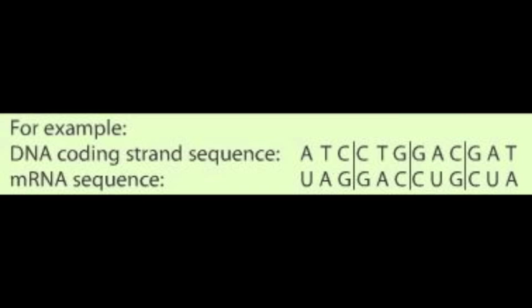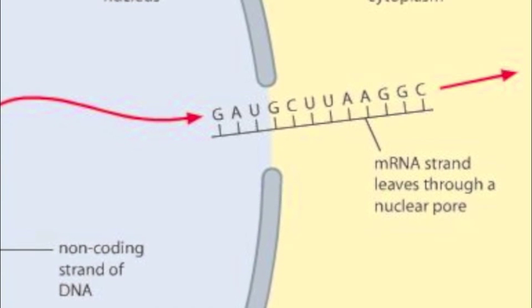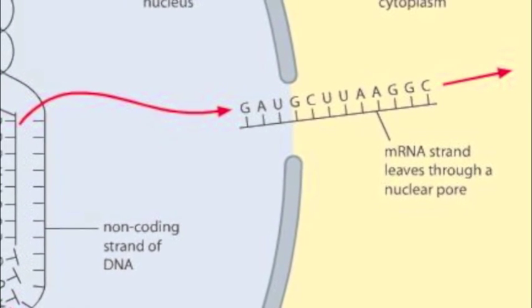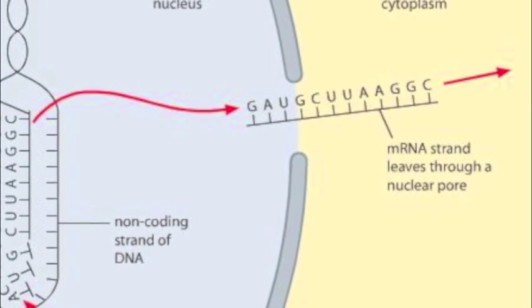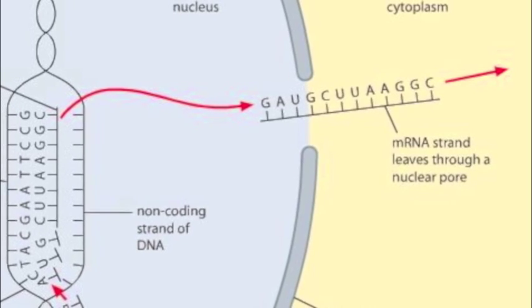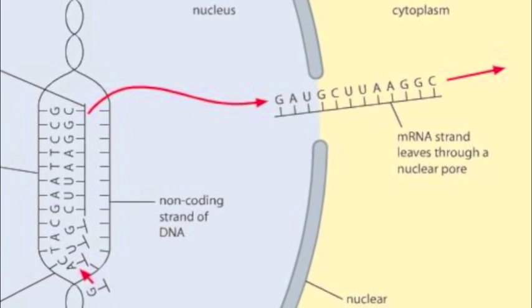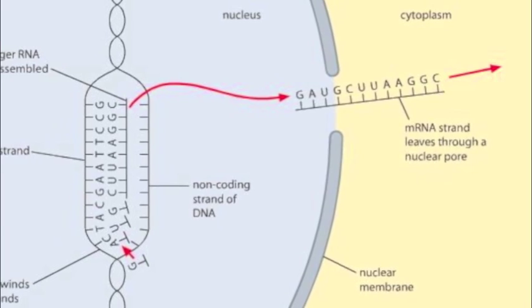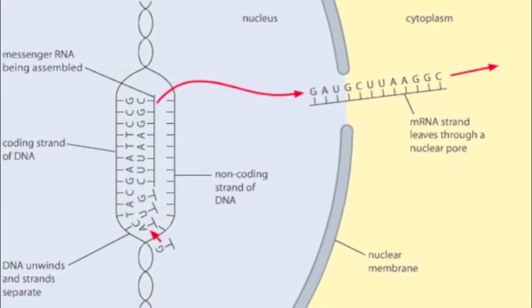However, because there is no T in RNA, the A in the DNA pairs with U in the mRNA. Study this example carefully. When the mRNA has been made, it breaks away from the DNA and leaves the nucleus through a nuclear pore. The DNA molecule then zips up again, and it can be used at a later time if more of the protein needs to be made.